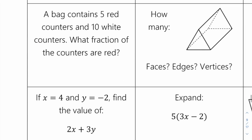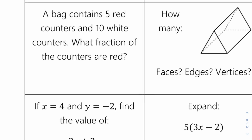A bag contains 5 red counters and 10 white counters. What fraction of the counters are red? It would be 5 out of the total of 15 — 10 plus 5 is 15. You can simplify the answer, which is one third.